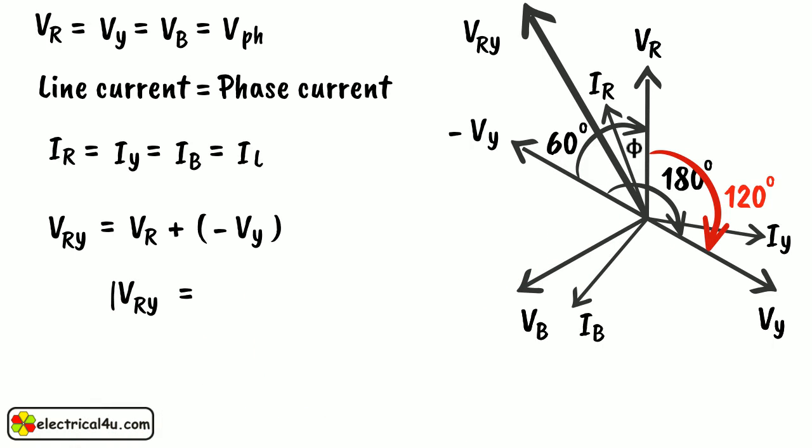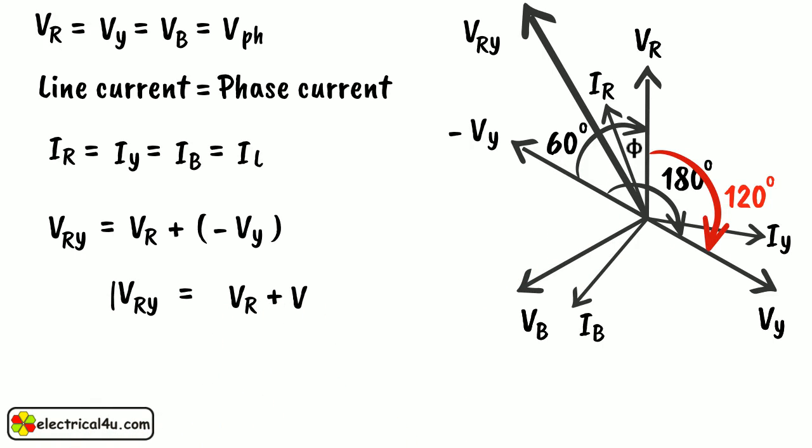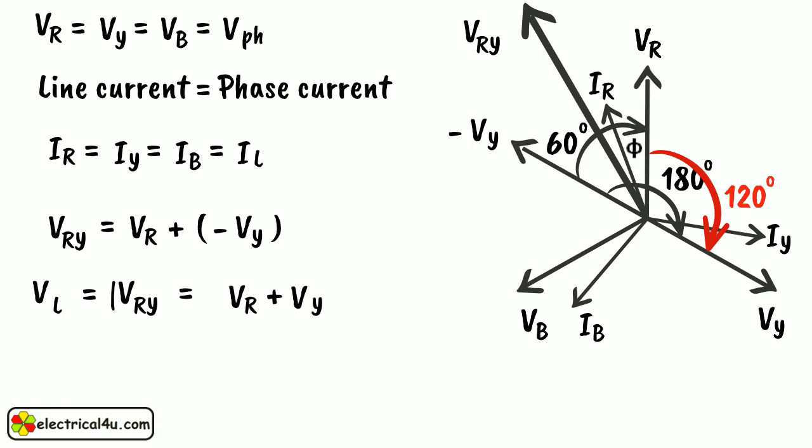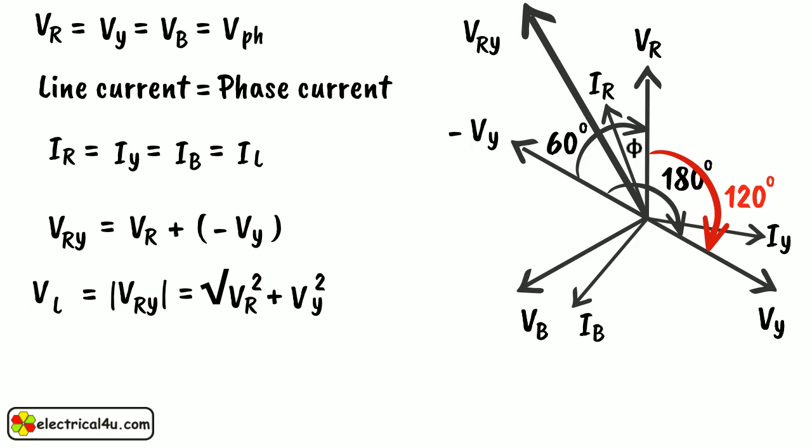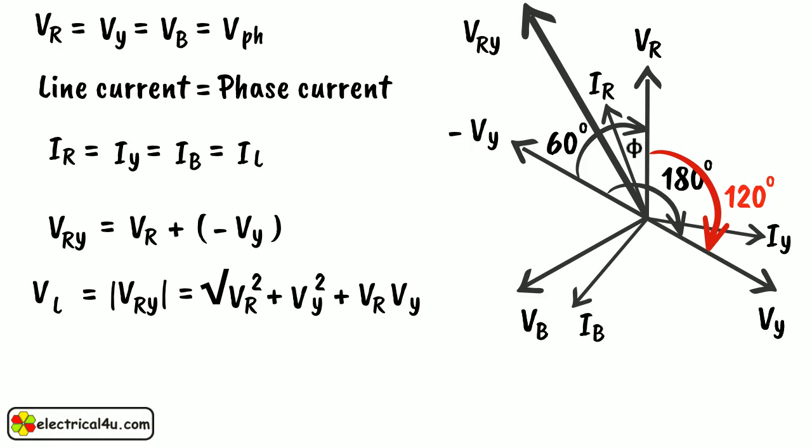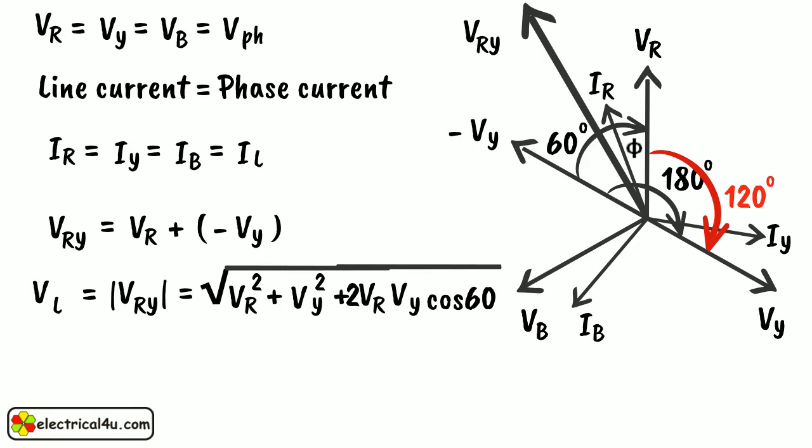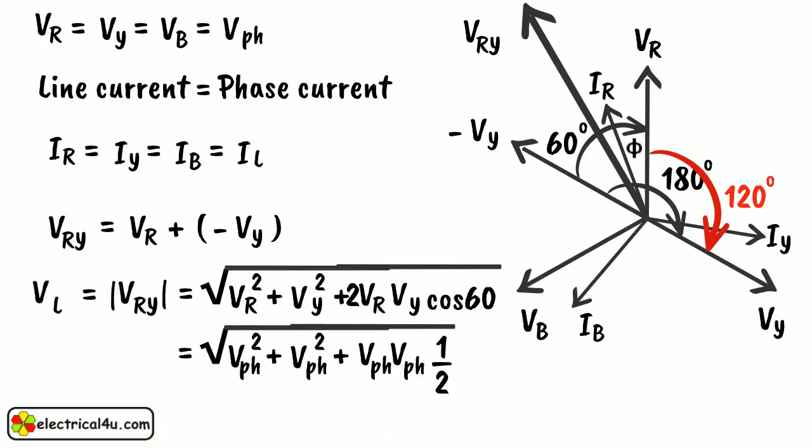Now VL equals mod VRY equals root over VR square plus VY square plus 2 into VR into VY into cos 60 degrees. That equals root over Vph square plus Vph square plus 2Vph into Vph into half, equals root 3 Vph. Therefore VL equals root 3 Vph.